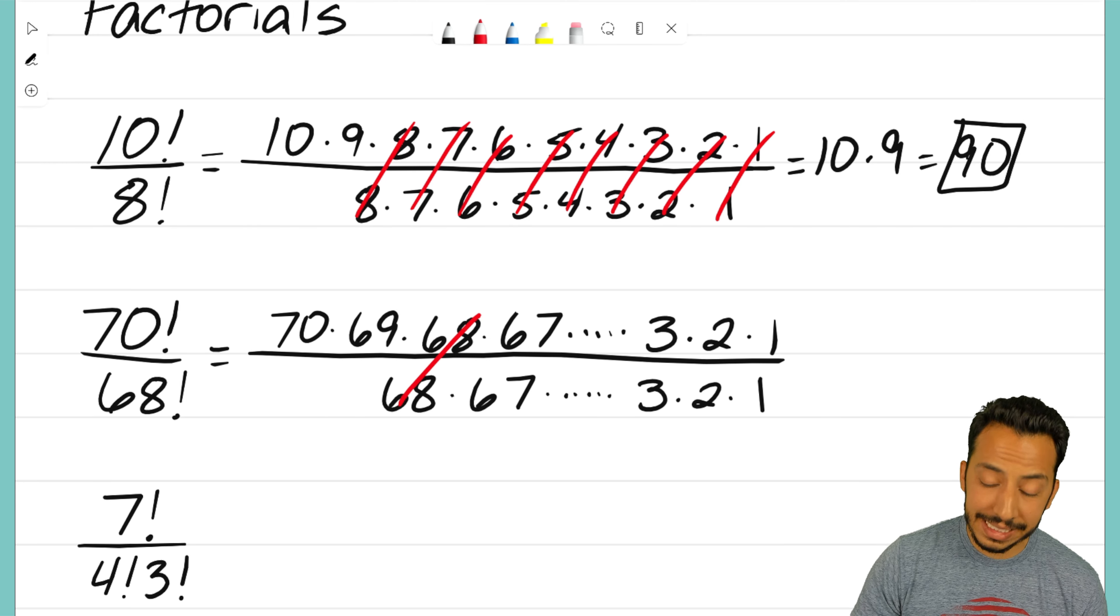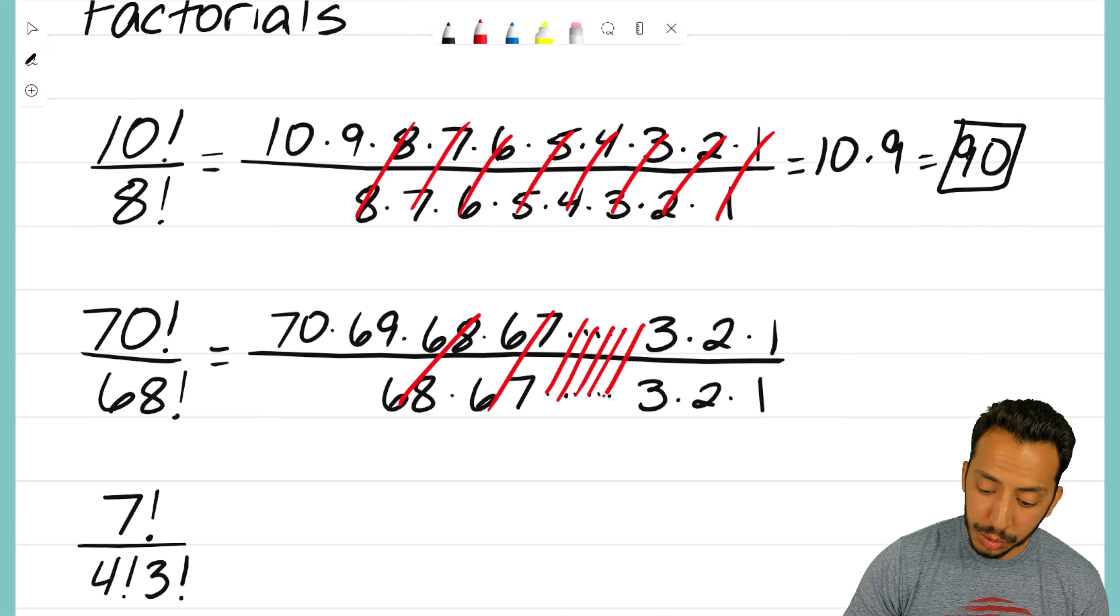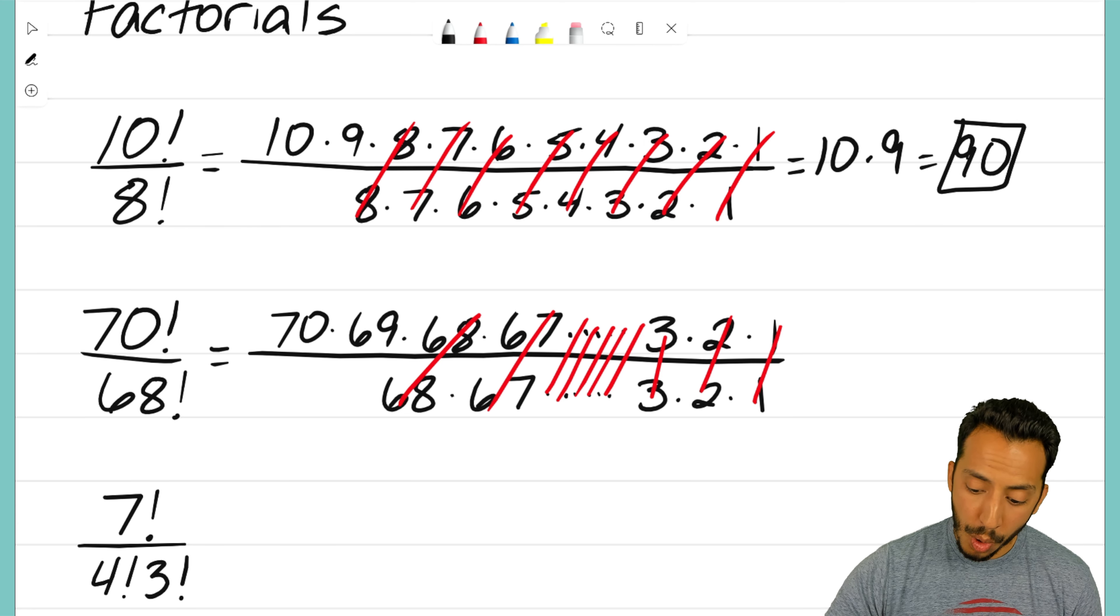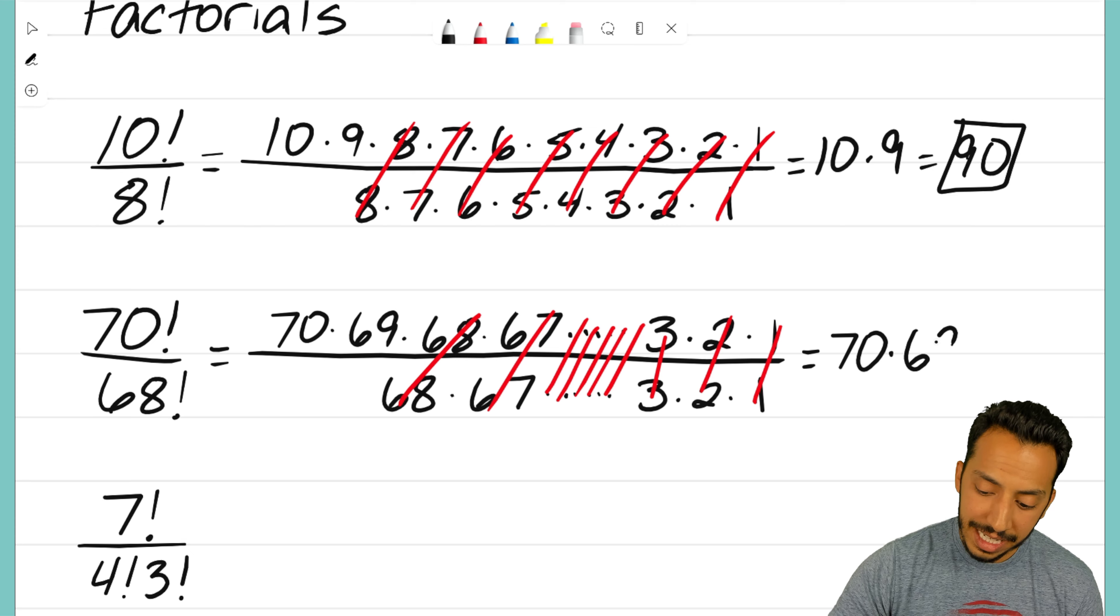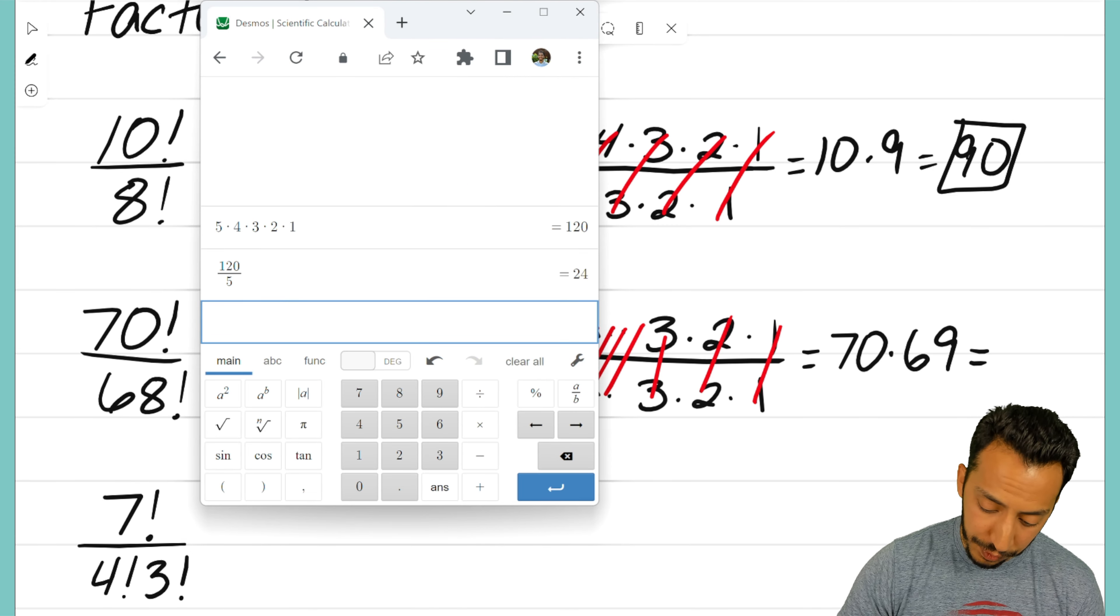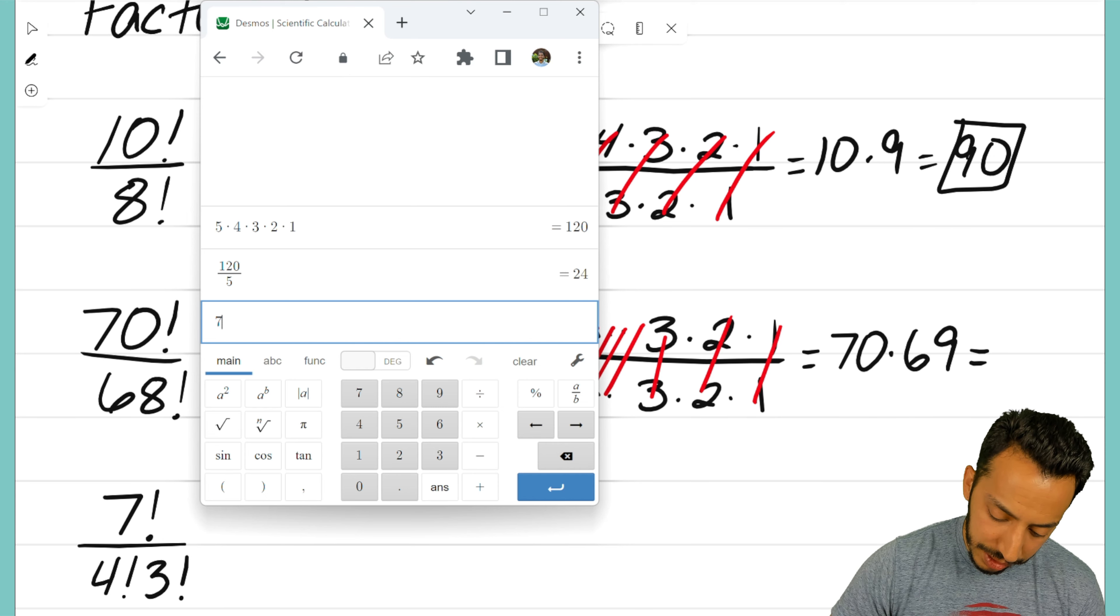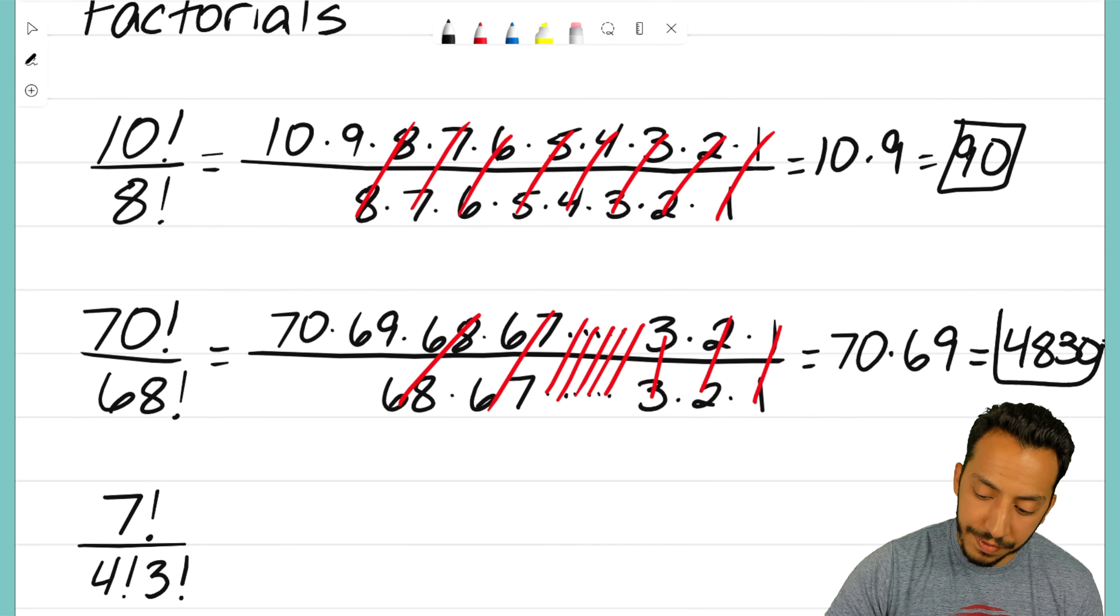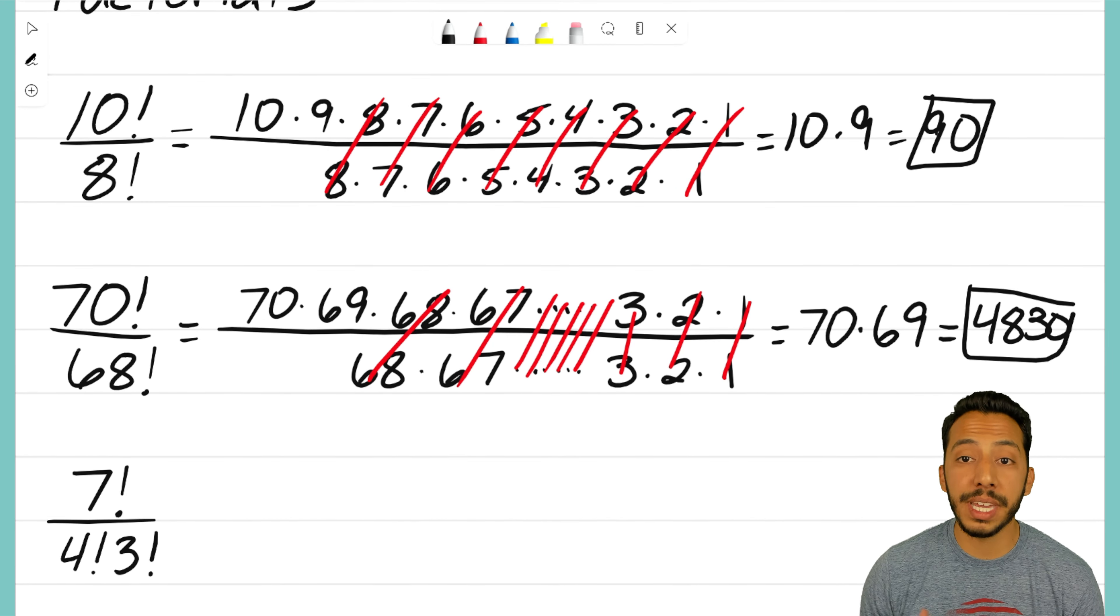I think we can do exactly what we just did for this problem. Any matching numbers we want to cross out. My 68s become 1, my 67s become 1, all the numbers in between are going to cancel out when we finally end up at 3 times 2 times 1. For this problem, we're left with just these two numbers: 70 times 69. We need a calculator for this one—70 times 69 ends up being 4830.